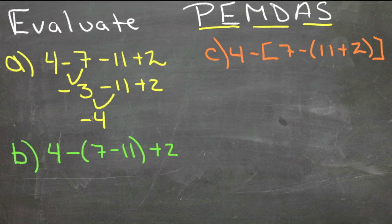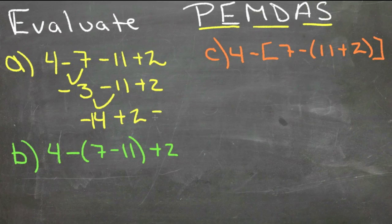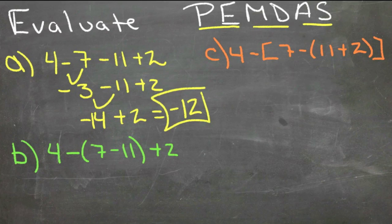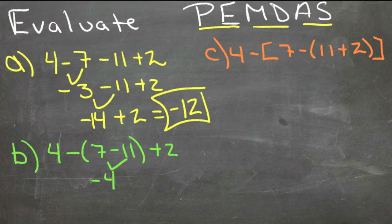In our second example we have one set of parentheses so we'll complete that first. We have 7 minus 11, that's negative 4. So now we have 4 minus negative 4 plus 2, and when you're subtracting a negative that's the same as adding.